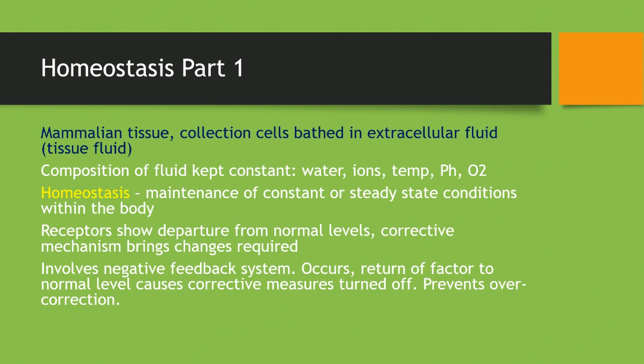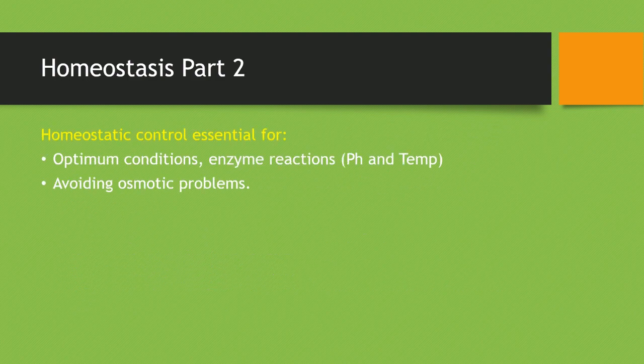Homeostasis has receptors that detect departure from normal levels. For example, in humans our temperature is 37 degrees — if it reaches 45 degrees, you have a fever, the receptors will show this, and then the corrective mechanism will cool your body down, for example through sweating, bringing you back to your normal temperature. Negative feedback must also occur: when your body returns to 37 degrees, you don't want it to overshoot and drop to maybe 32 or 33 degrees, so negative feedback turns off the corrective measures and prevents overcorrection. Homeostatic control is essential for providing the optimum conditions for enzyme reactions in terms of pH and temperature, and to avoid osmotic problems.